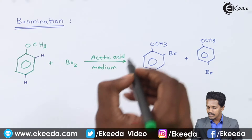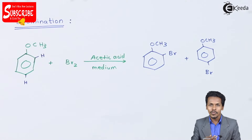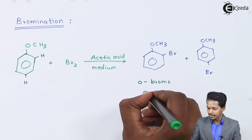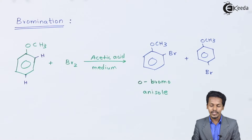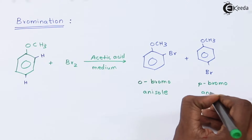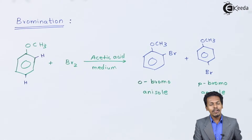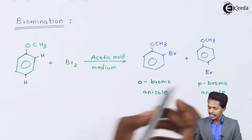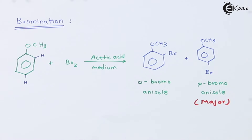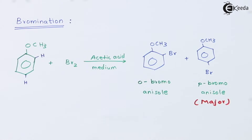The product with bromine at the ortho position is named ortho-bromoanisole, and the other is para-bromoanisole. Out of these, the product formed in greater quantity is para-bromoanisole, which is the major product obtained when anisole is treated with bromine in acetic acid medium.